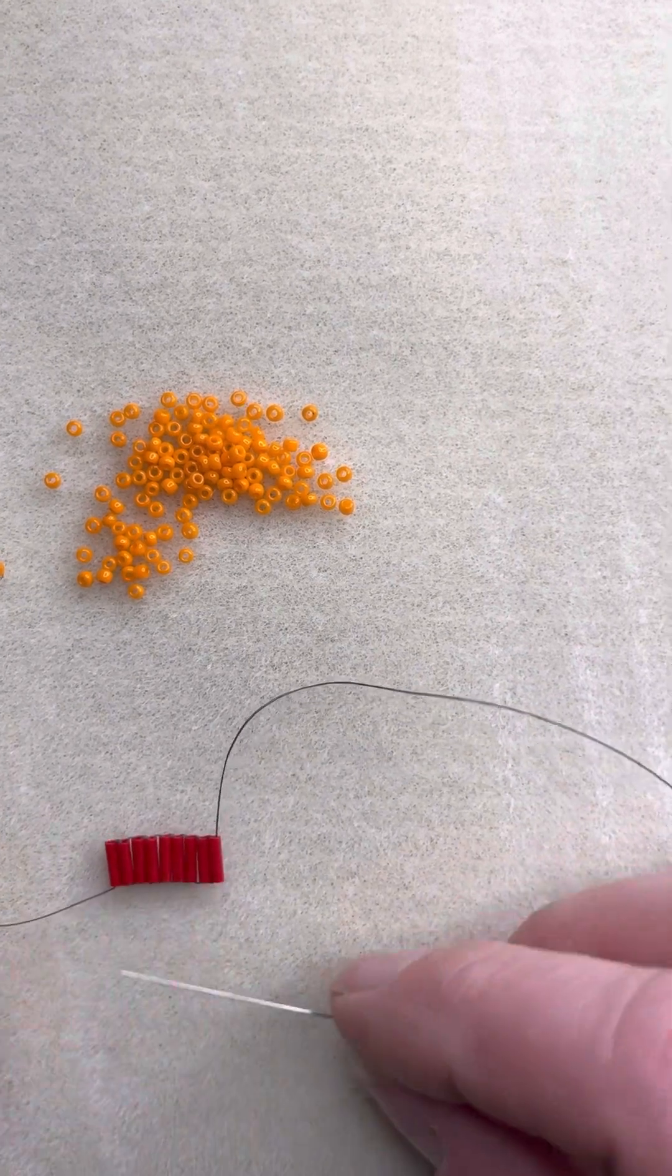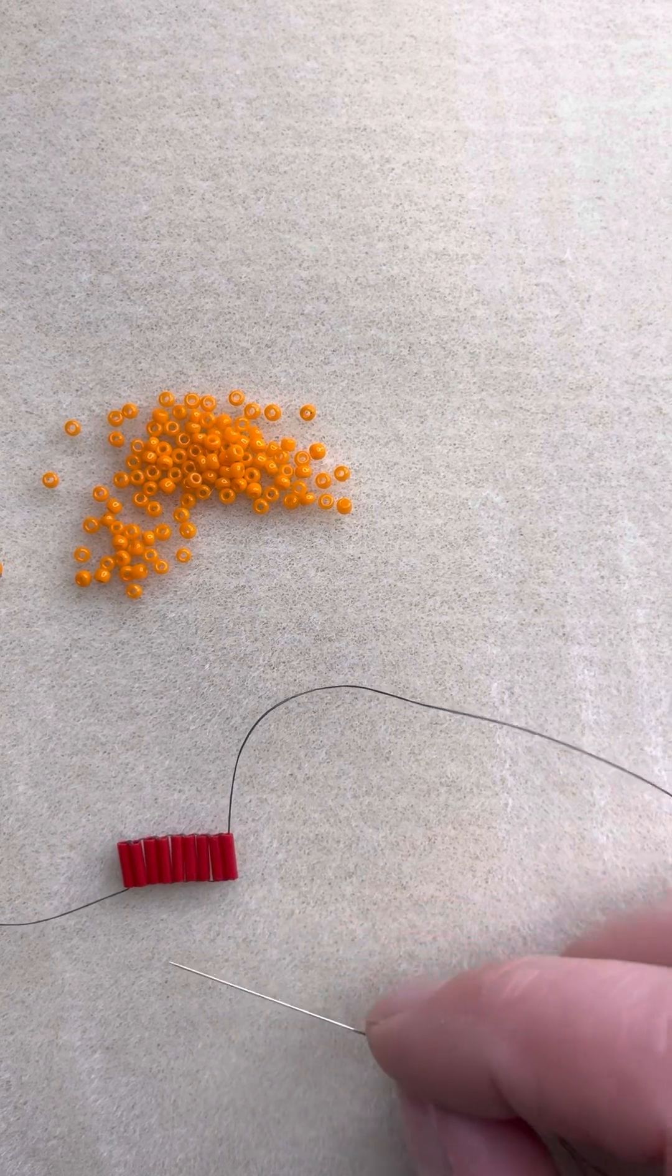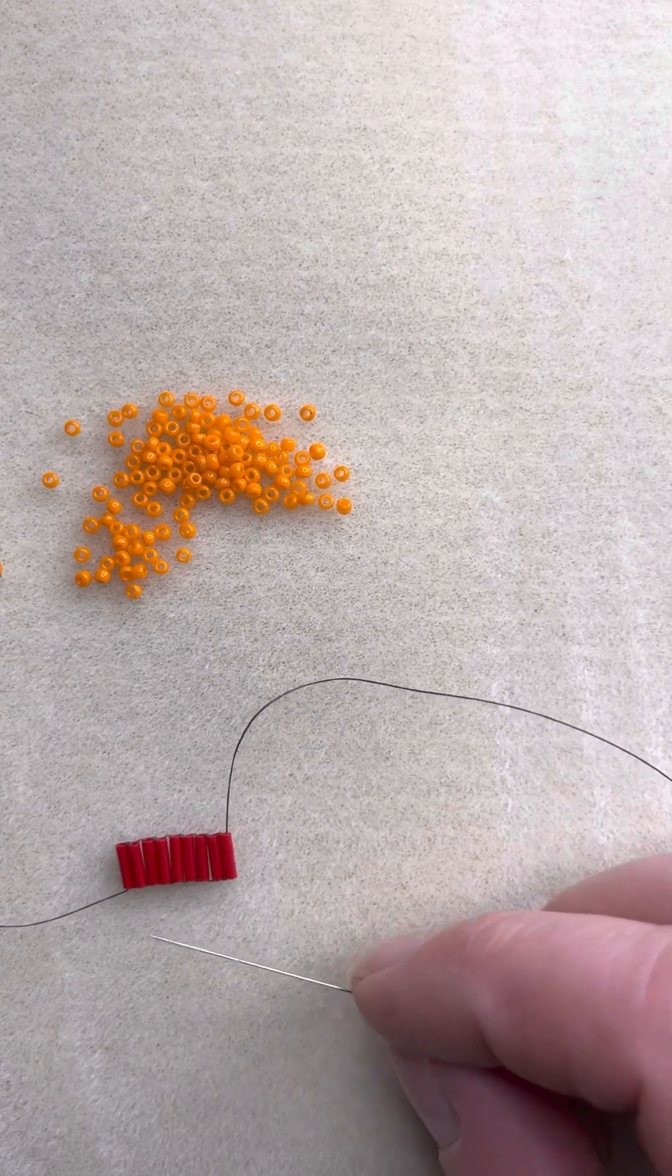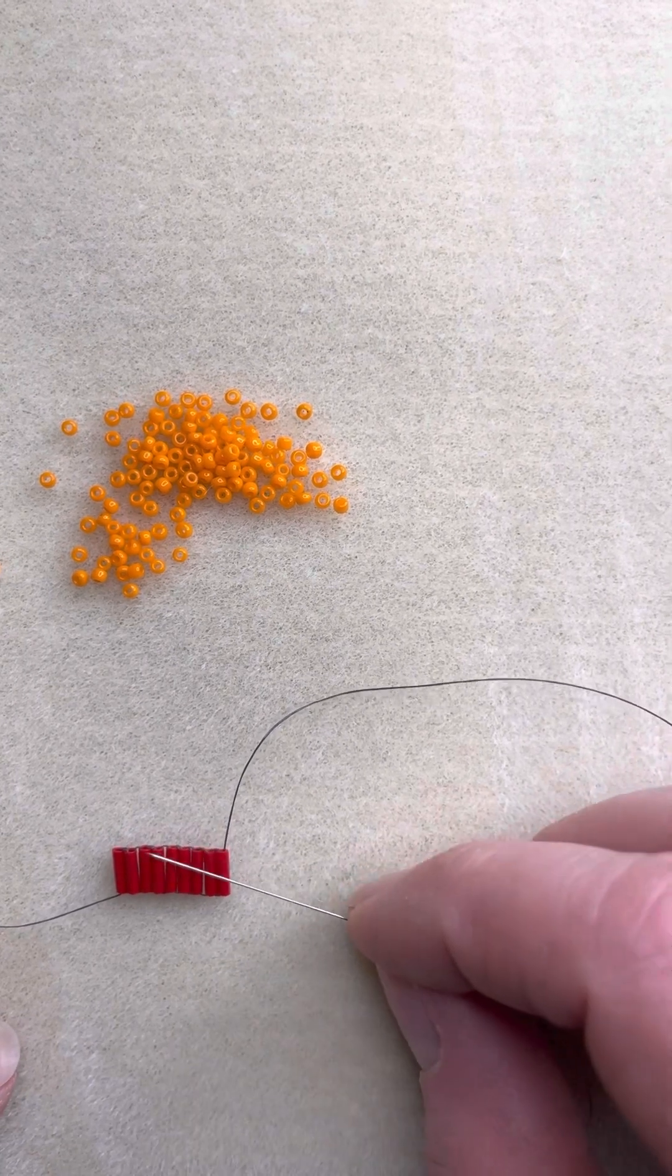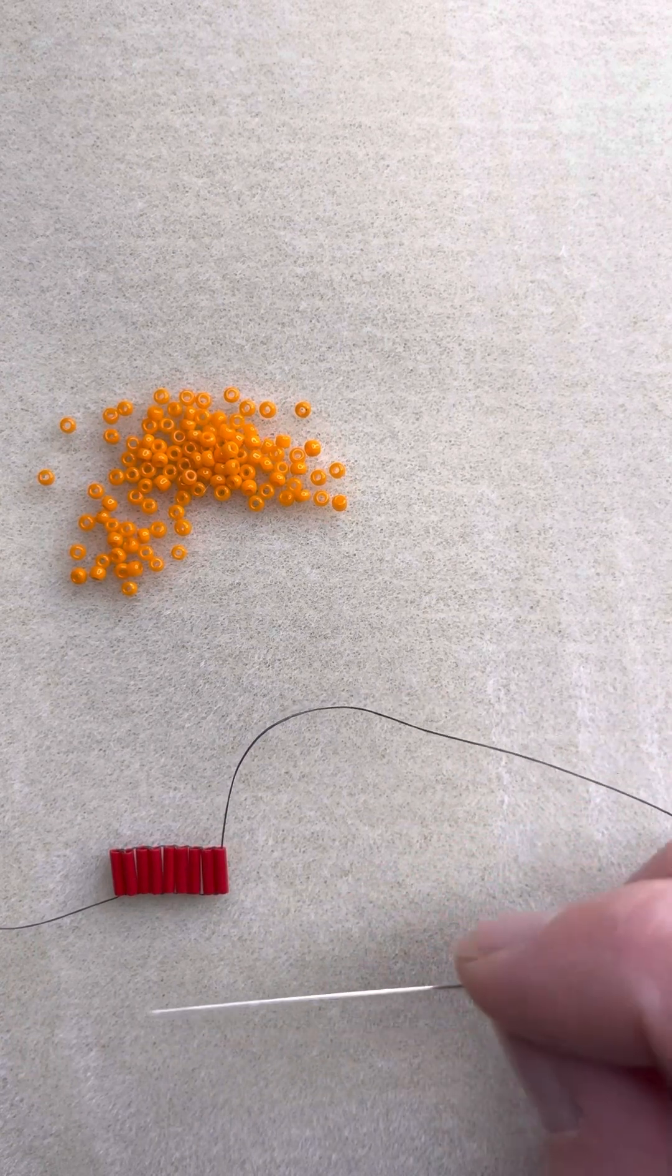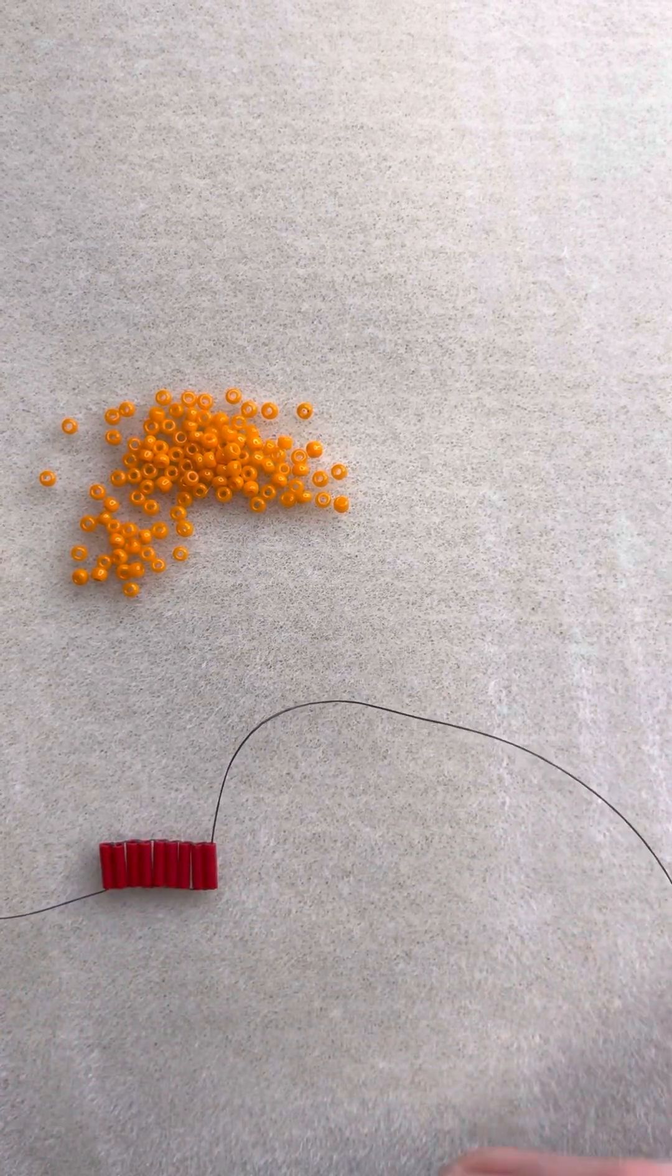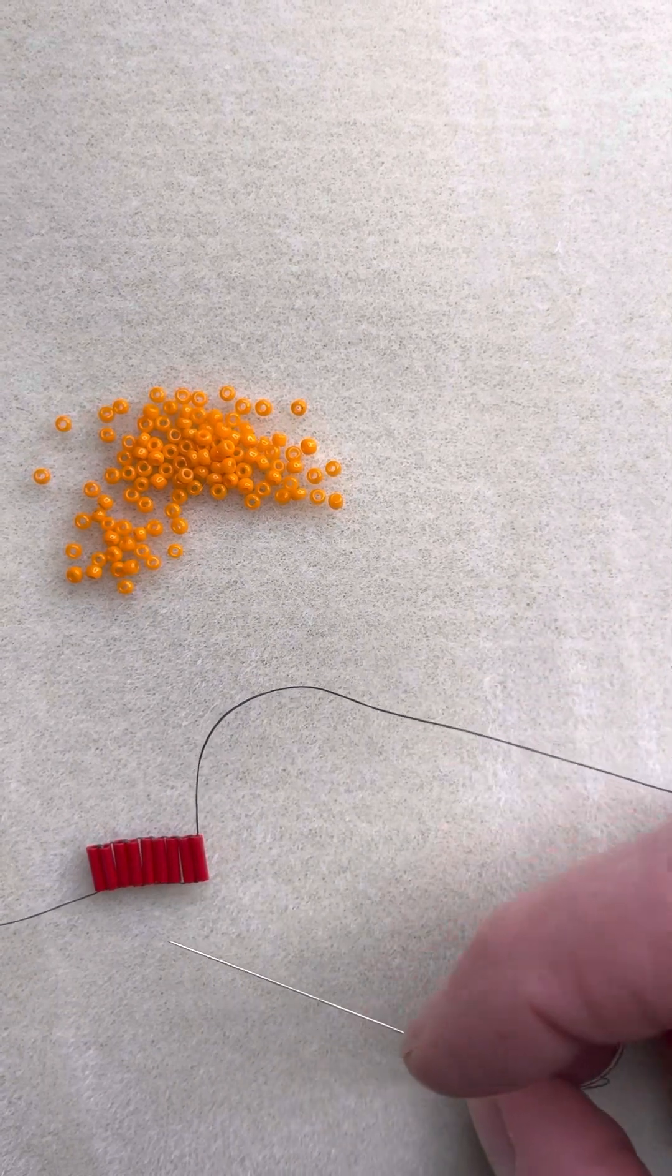I'm starting here with a row of nine bugle beads that I've put together with a ladder stitch. That's a different demonstration. And we're going to build some brick stitch beads on top of these ladder beads. So I'm working with Fireline, size 12 needle, size 11 seed beads on top of our bugles.